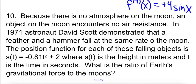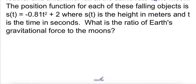This is the last problem today. Because there is no atmosphere on the moon, an object on the moon encounters no air resistance. In 1971, astronaut David Scott demonstrated that a feather and a hammer fall at the same rate on the moon. The position function for each of these falling objects is s of t equals negative 0.81t squared plus 2, where s of t is in meters and t is time in seconds. We want to find the ratio of Earth's gravitational force to the moon's, which means finding the acceleration due to gravity on the moon.